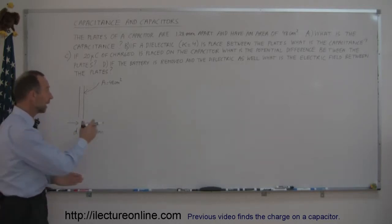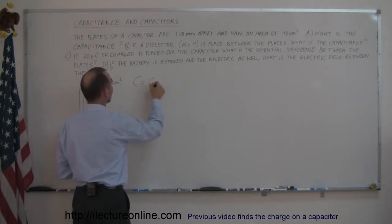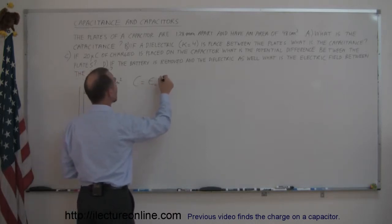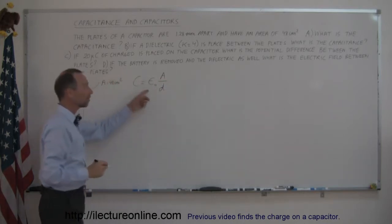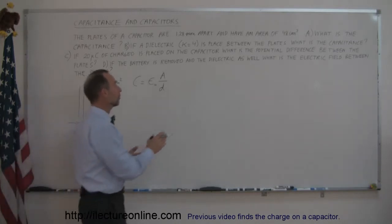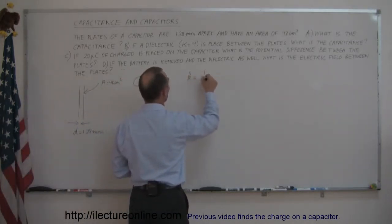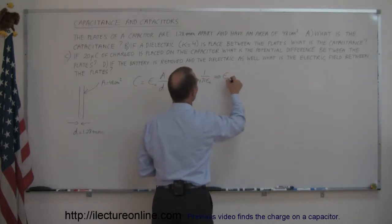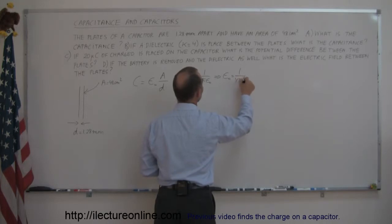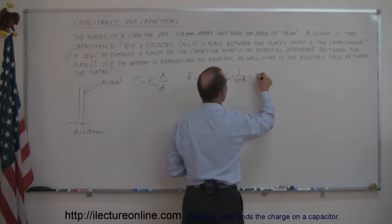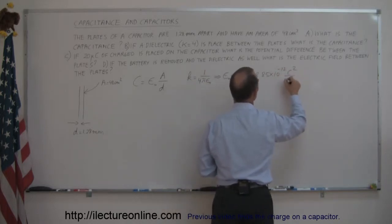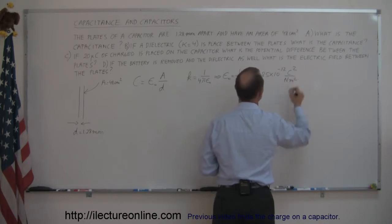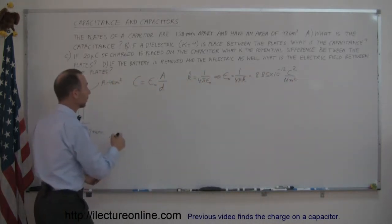The capacitance is equal to epsilon sub nought times the area of the plates divided by the distance between the plates. Epsilon sub nought is related to K as follows: K equals 1 over 4π epsilon sub nought, which means epsilon sub nought equals 1 over 4πK, and that value is 8.85 times 10 to the minus 12 Coulombs squared per Newton meters squared.